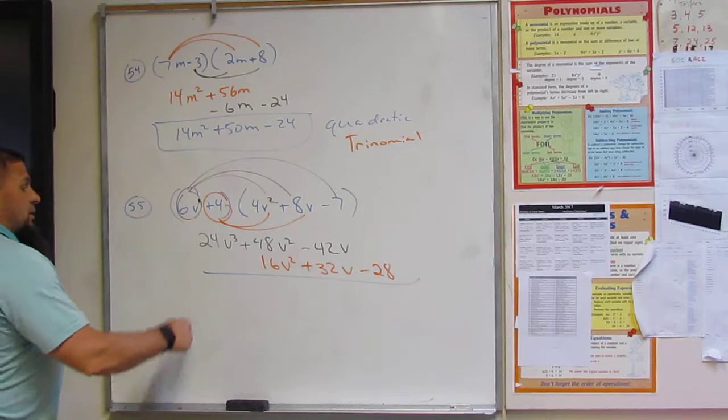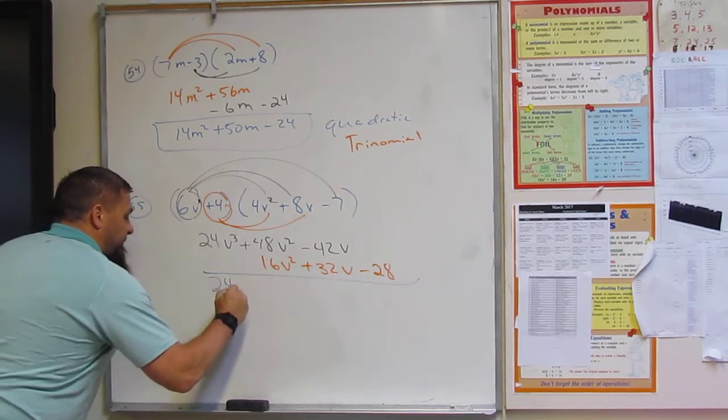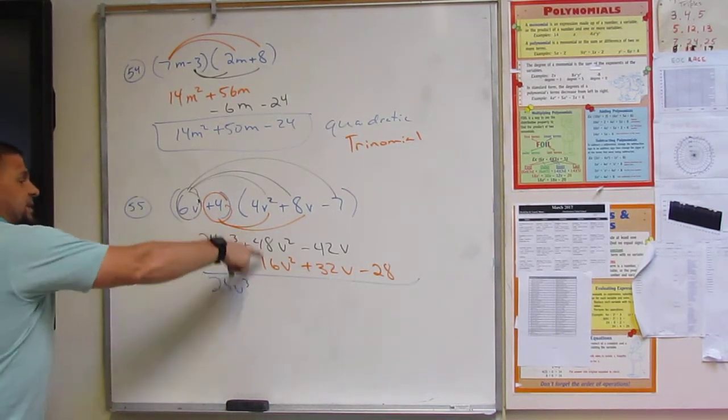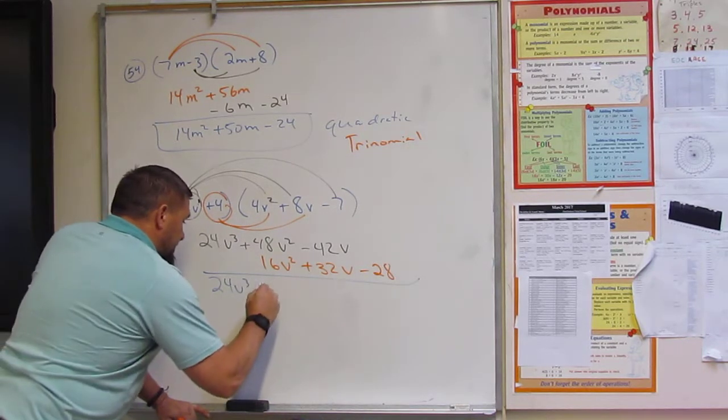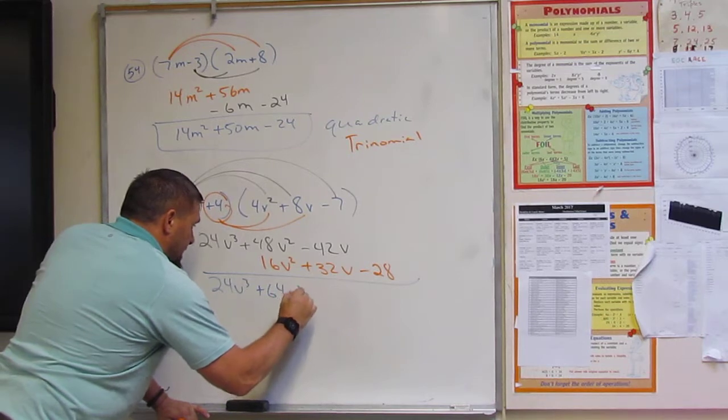So then we're going to add them up. So that's just 24V cubed. But what's 16 and 48? Very good. 64.